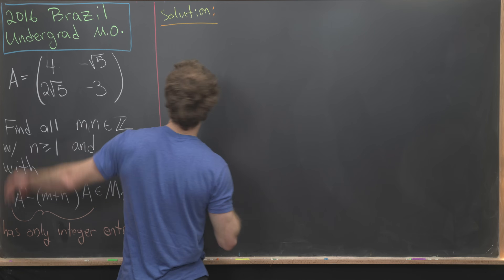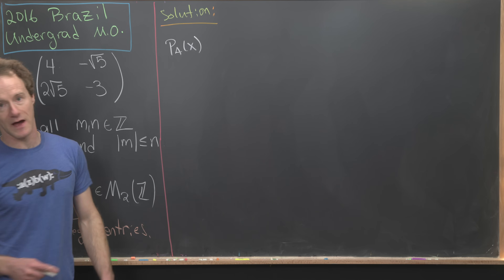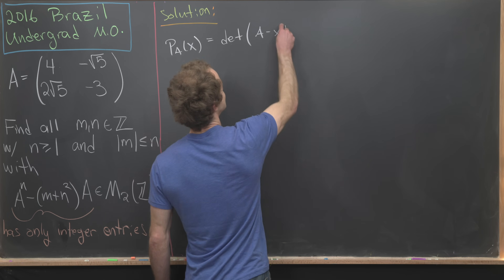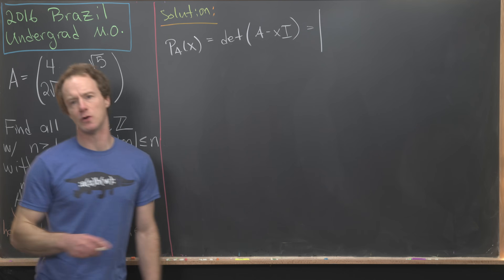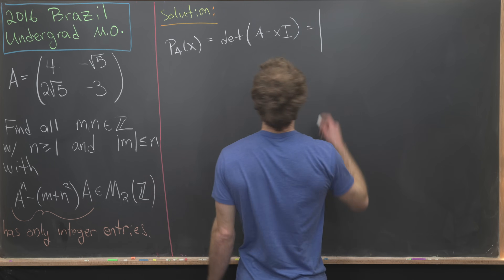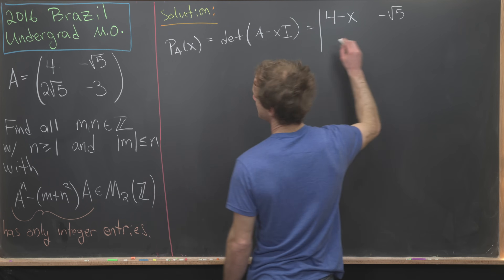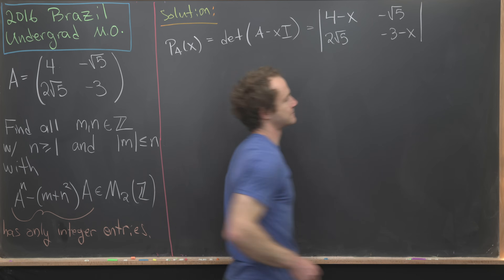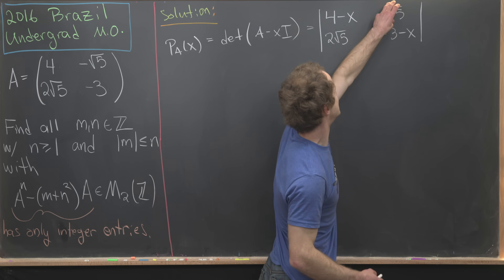We need to find the eigenvalues of A by computing the characteristic polynomial, which I'll call p_A(x). That's defined as the determinant of (A − xI), giving us the determinant of [4−x, −√5; 2√5, −3−x]. Using the standard 2×2 determinant formula, ad − bc.